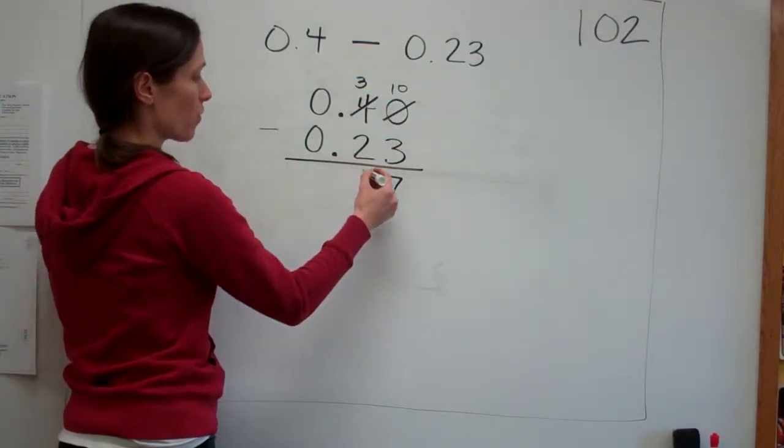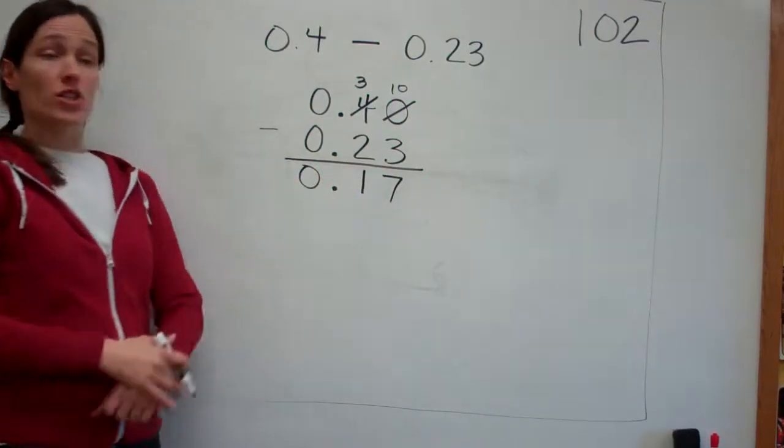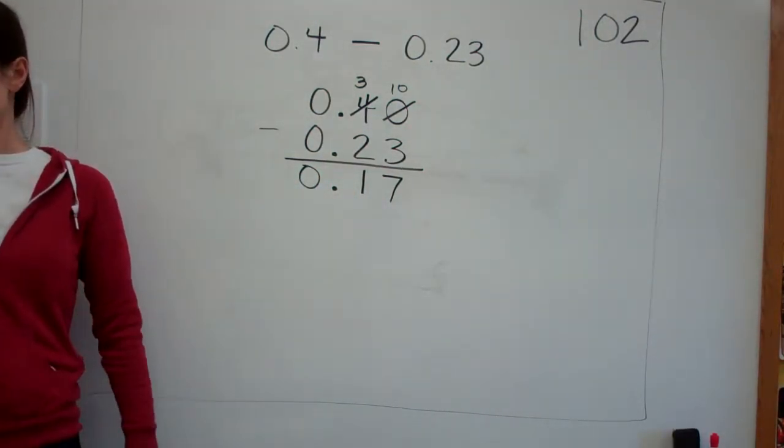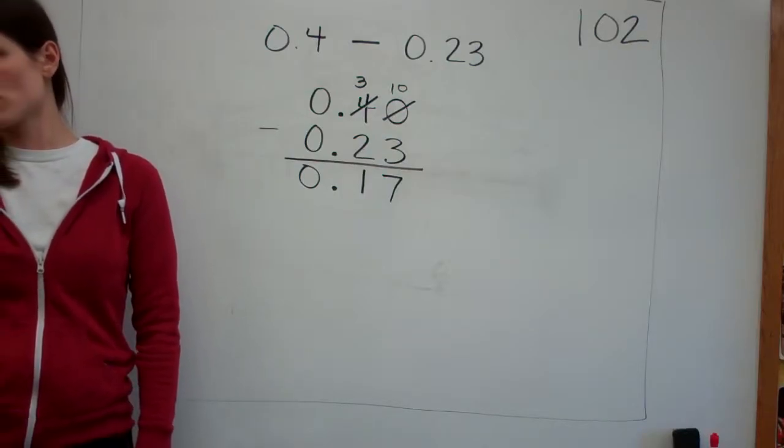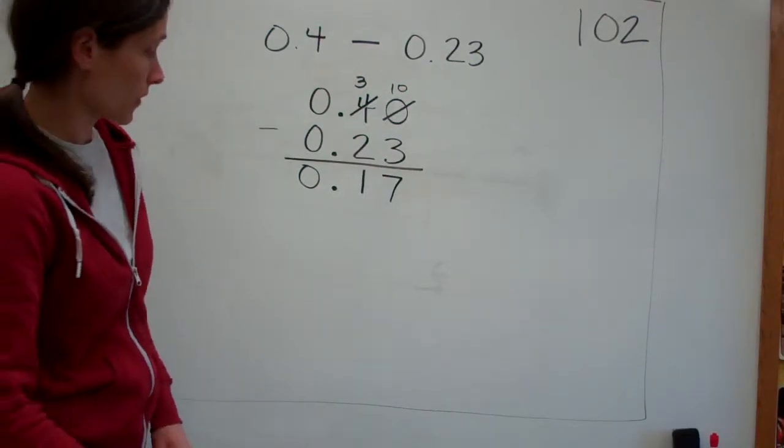And then 2 from 3 is 1, and then I'll bring my decimal down. So our answer would be 0.17. You would have had a completely different answer if you did 3. That would be 0.23. It would look totally different. This is 0.17.